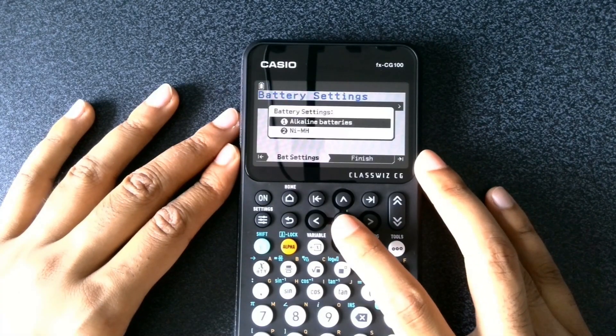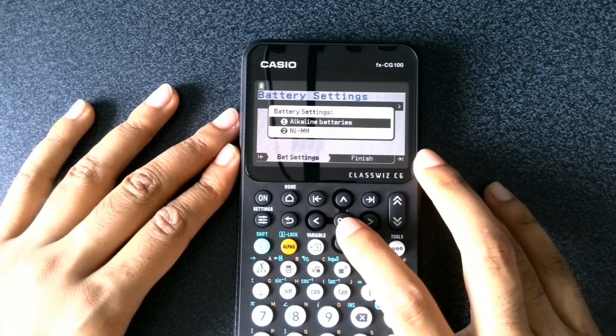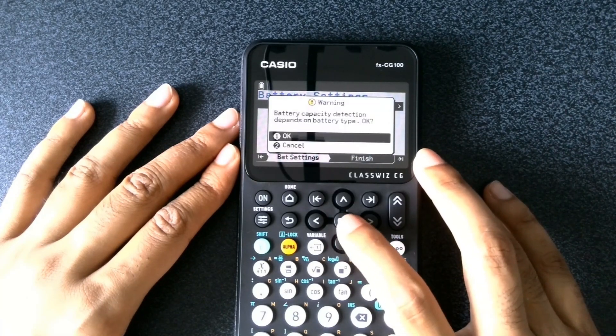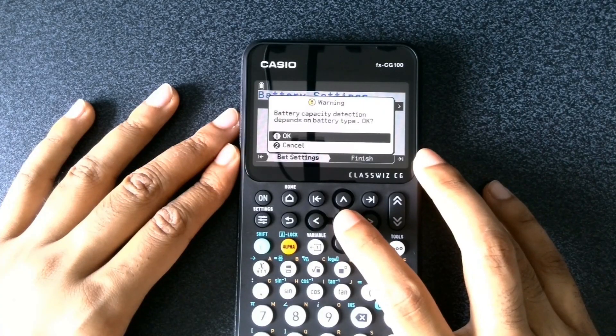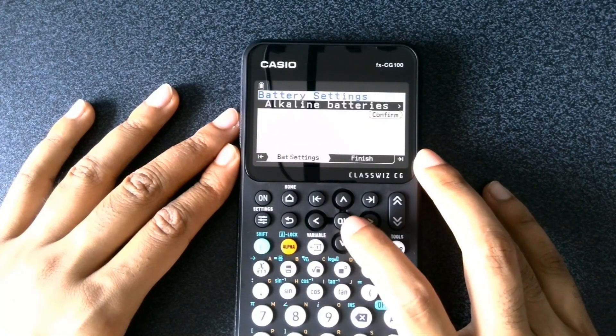I've put in alkaline batteries. The second option is for rechargeable batteries. We've got alkaline batteries. This popup appears which tells us that the battery capacity detection depends on the battery type. Let's confirm this.